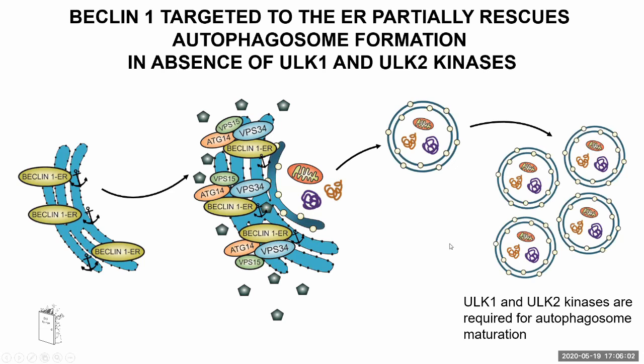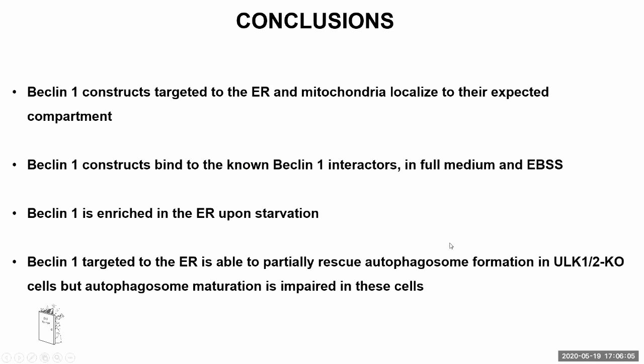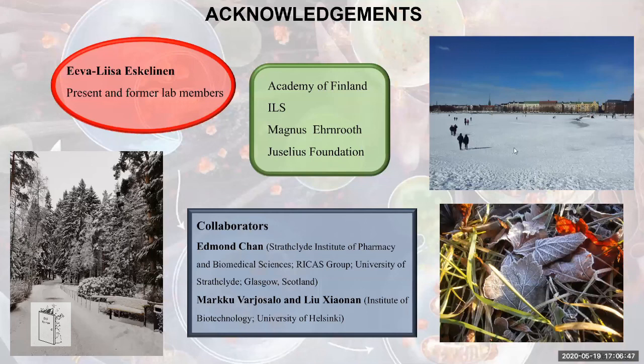To conclude: Beclin-1 constructs targeted to the ER and mitochondria localized to their expected compartments. Beclin-1 constructs bind to known Beclin-1 interactors both in full medium and in EBSS. Beclin-1 is enriched in the ER upon starvation. And Beclin-1 targeted to the ER was able to partially rescue autophagosome formation in ULK1/ULK2 knockout cells, but autophagosome maturation was impaired in these cells. I'll conclude with acknowledgements of my former lab, my former boss Erika Eskelinen, impressive former lab members, our funding, and our collaborators. Thank you all for your attention.